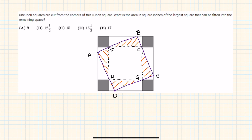The question was: one-inch squares are cut from the corners of a five-inch square. So this was a five-inch square and a one-inch corner was cut out from each corner. You have to find out the area in square inches of the largest square that can be fitted into the remaining space.